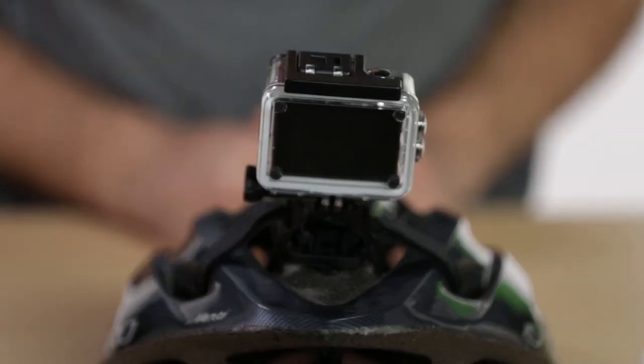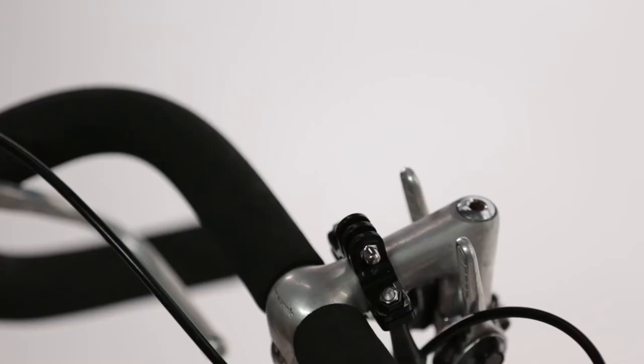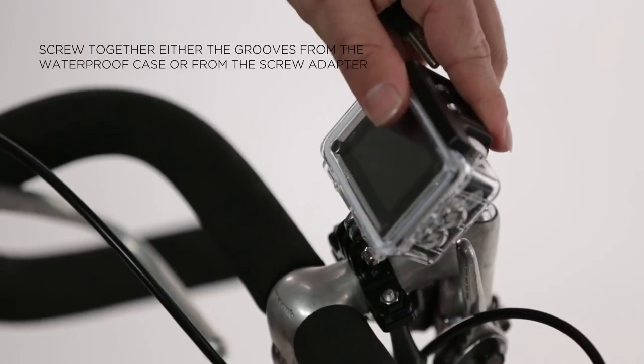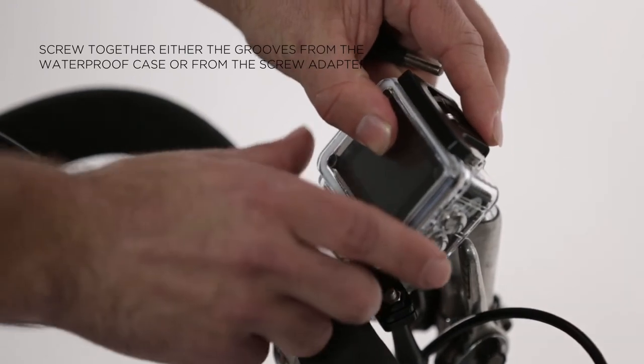The HD action camera can be mounted on bike handlebars too. Use the bicycle or pole mount and screw together either the grooves from the waterproof case or from the screw adapter.